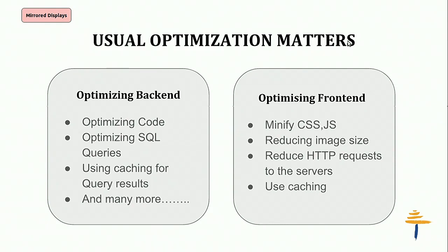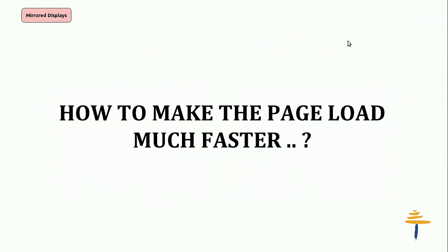There are some other usual optimizations we do on our sites: optimizing our code, making queries as simple as possible, and using caching. From the front-end perspective, we minify JS, minify CSS, try to reduce and cache images, and try to make as few connections as possible. But how can we make the page load faster? Even with these optimizations, we still have lag — especially with Drupal.